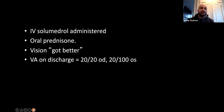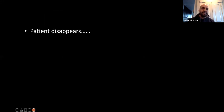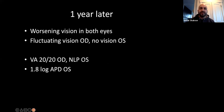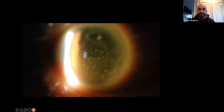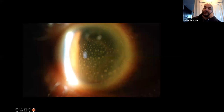IV solumedrol was given and vision got better. The patient then disappeared for a year, as often happens. One year later, she returned with worsening vision in both eyes and fluctuating vision in the right. Now she's NLP in the left eye and 20/20 in the right. She also had granulomatous anterior uveitis in the left eye and a lot of vitritis, making it very hard to see if there was band uveitis or posterior uveitis.